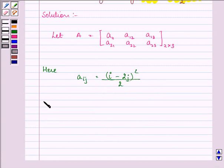So we can find A11 by substituting the value of I and j as 1 and 1 here. We have 1 minus 2 into 1 the whole square divided by 2. That implies A11 is equal to minus 1 the whole square will be 1 upon 2.